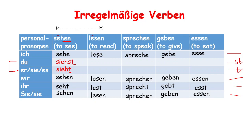For lesen, here we already have an 's' in the stem. So the first 'e' changes to 'ie', but we are not going to add another 's' with du — the existing 's' already covers it.